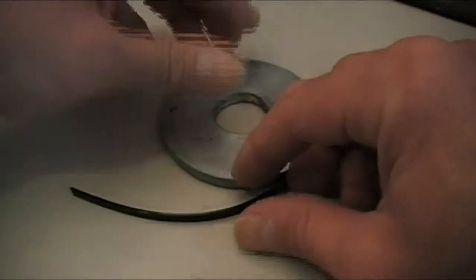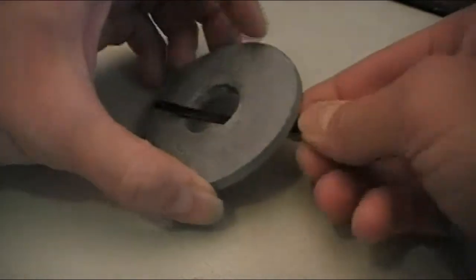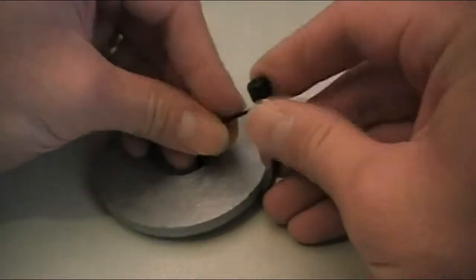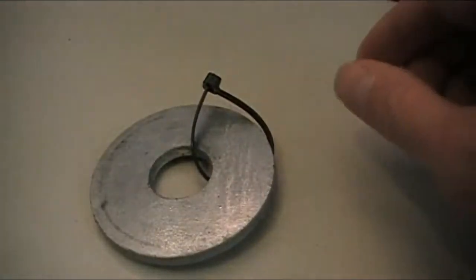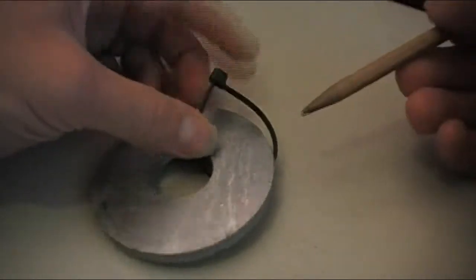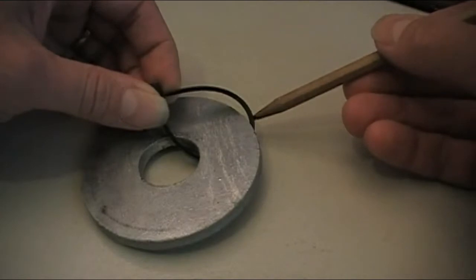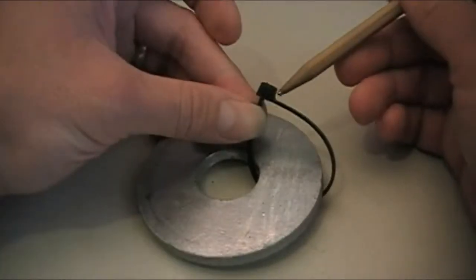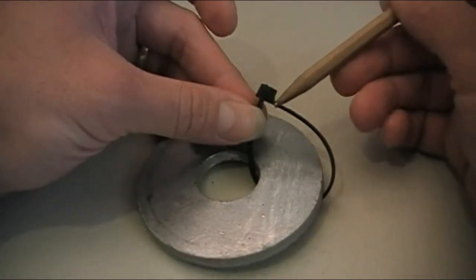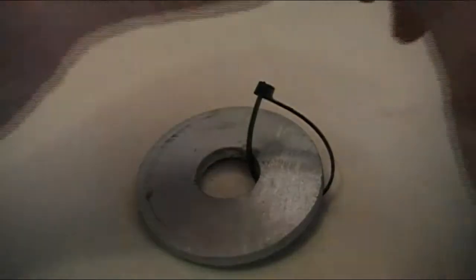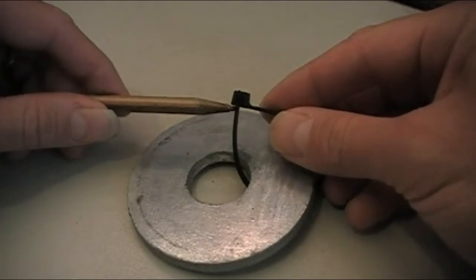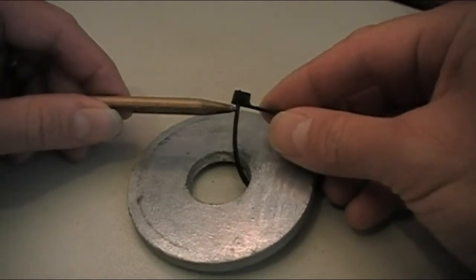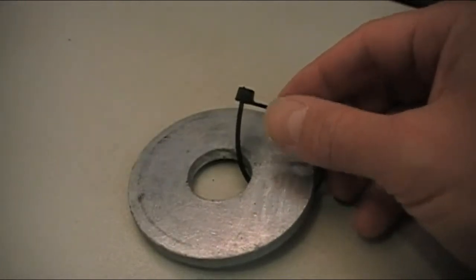Now what most people do when they have a zip tie tied around an object and they have to remove it is they'll sometimes cut it in the middle here or up near the base of the head. If you cut it there, you won't be able to reuse it. But if you cut the zip tie right where the tail goes into the head, then you can use it again.